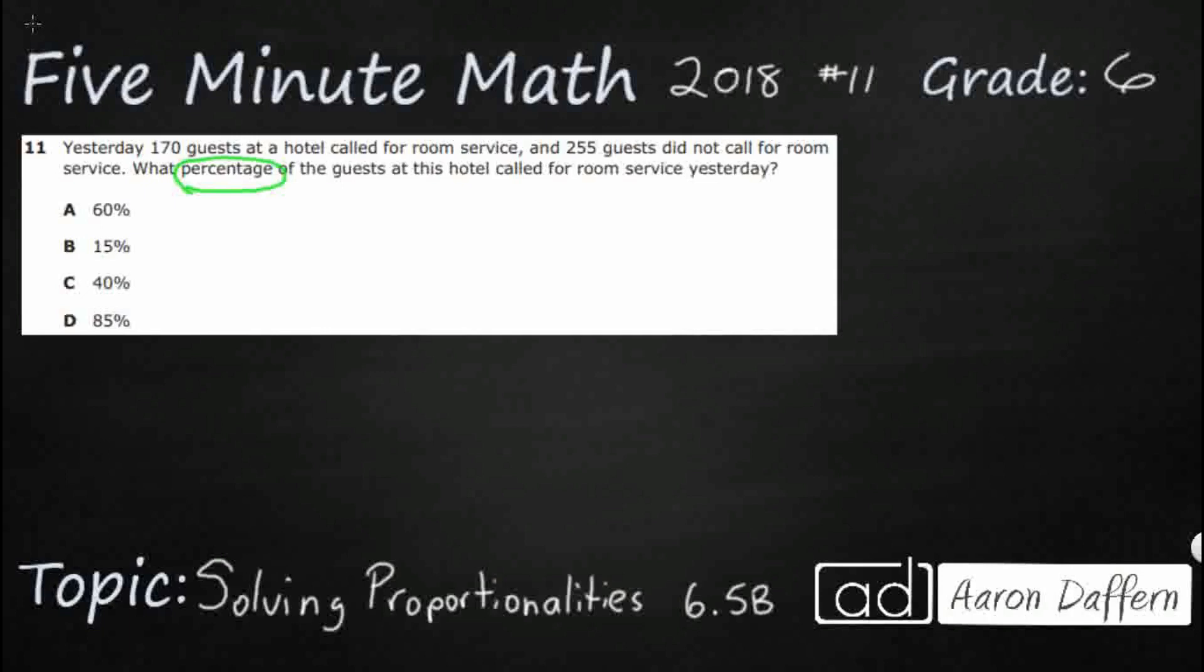So when we're dealing with proportionalities, we know that we are going to be given two out of these three items. We're going to be given a part, we're going to be given a whole or the total, and we're going to be given the percent. We'll be given two of those and we are looking for the third. In this case, we know we are looking for that third, for that percent.